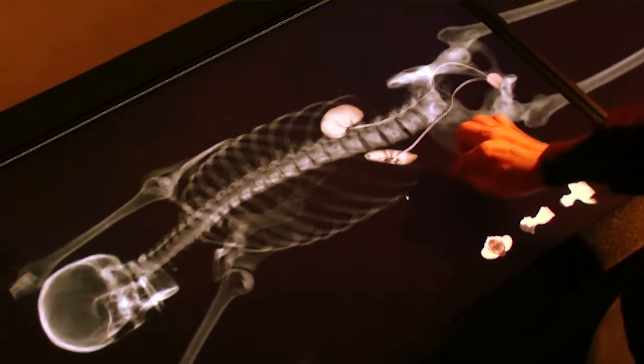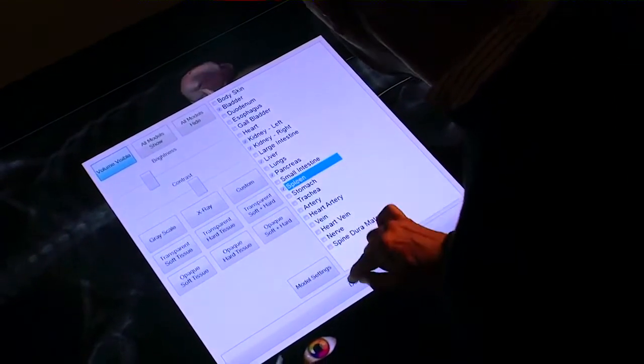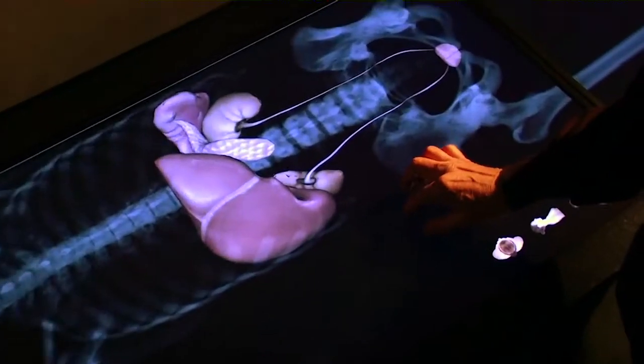Surface models can also be added into the volume for specific lessons, such as the kidneys and bladder seen here, and can be turned on and off at will, increasing the understanding of structural relationships.